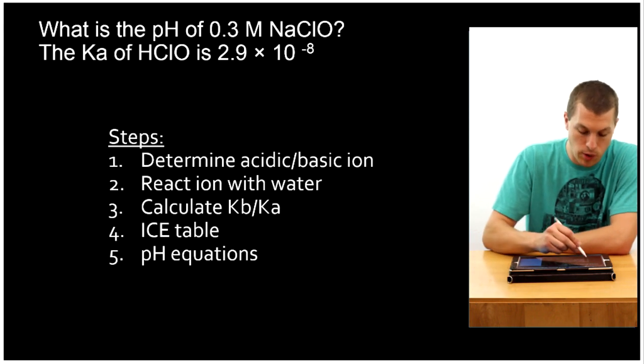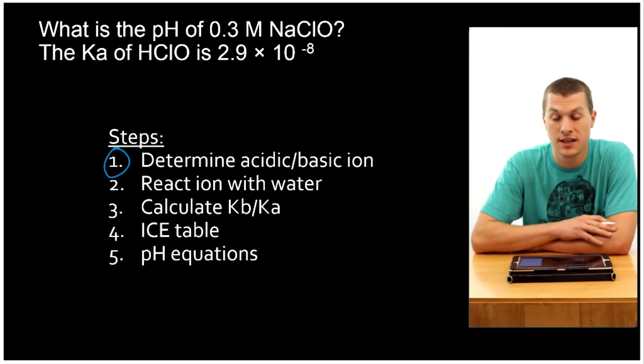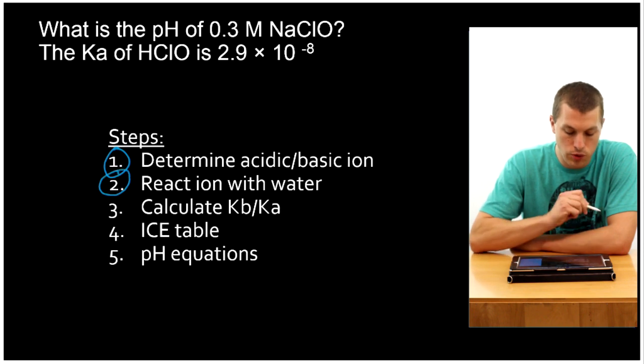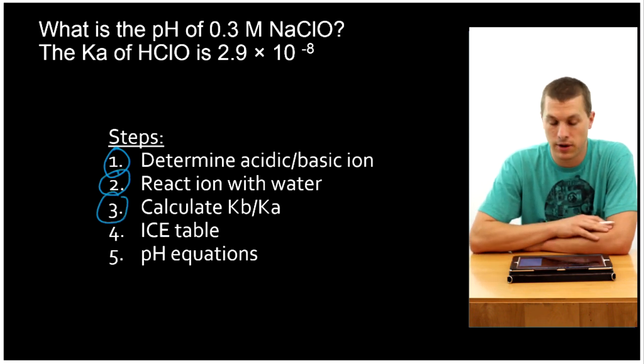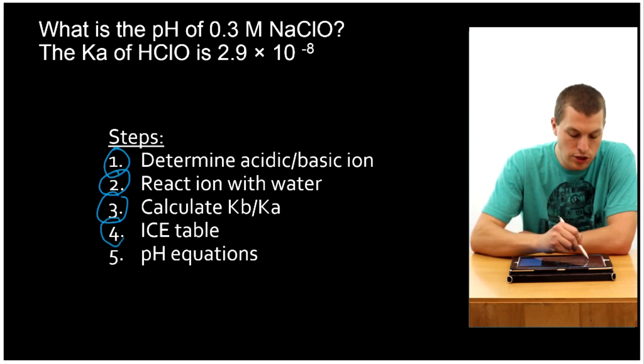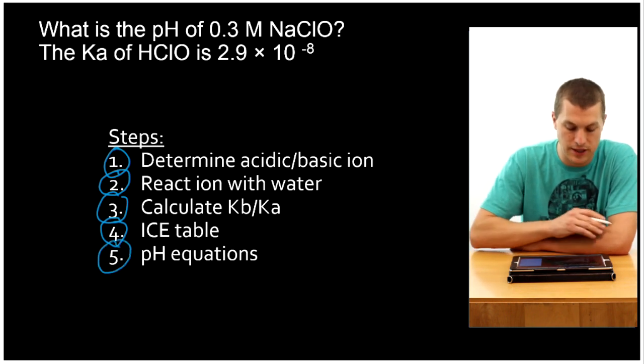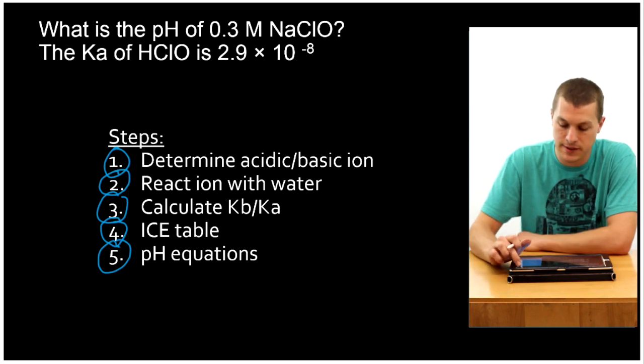What steps are we going to follow? Step one is we're going to look at which of those ions in NaClO is responsible for the basic nature of that compound. Then we're going to react that ion with water. Next, we're going to calculate the equilibrium constant for that reaction. Then we're going to use an ICE table much like we would in a weak acid or base problem, because it turns out when an ion acts like an acid or a base, it acts like a weak one. Then lastly, we'll use our pH equations. Let's go through this step by step.